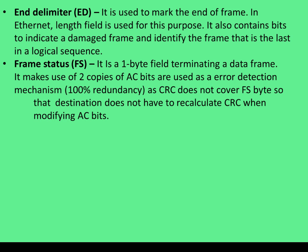The last field is FS, that is Frame Status. It is one byte and makes use of two copies of AC bits that are used as an error detection mechanism, since CRC does not cover FS bytes. So the destination does not have to recalculate CRC when modifying ACs. It basically informs the source that data has been received successfully.